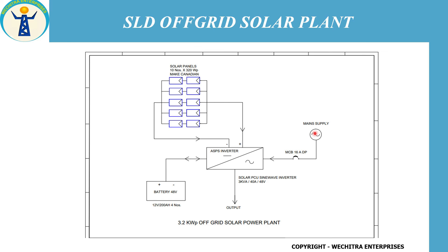Here we have solar panels to charge our batteries and to give electricity supply to the load. The output from this inverter will be connected to your output load — a maximum of 3.2 kilowatt peak load will be connected with this output. This is how the off-grid type of solar power plant works.